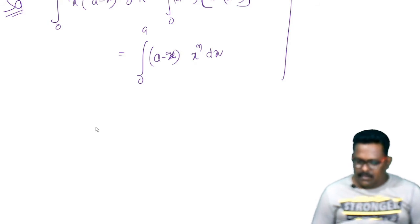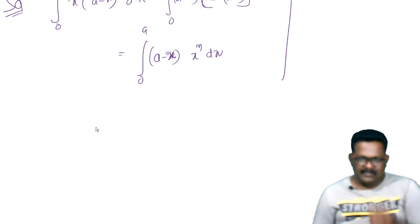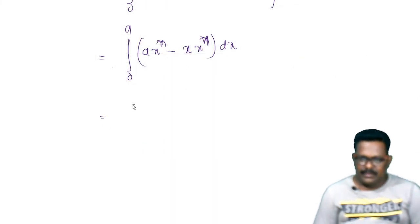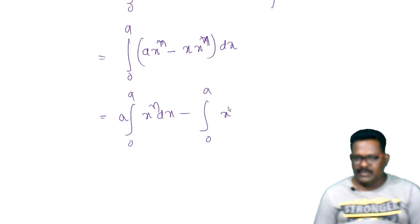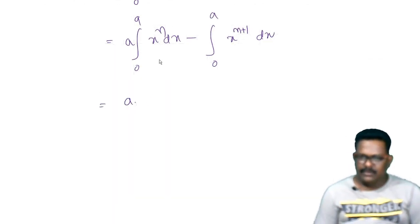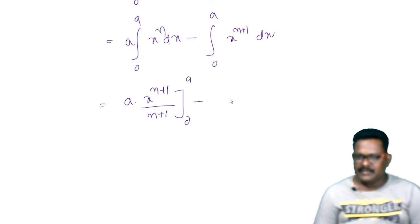This gives: the integral from 0 to a of a·xⁿ dx minus the integral from 0 to a of x·xⁿ dx, which is the integral from 0 to a of a·xⁿ minus x^(n+1) dx. Integrating by parts or directly: a · [x^(n+1)/(n+1)] from 0 to a, minus [x^(n+2)/(n+2)] from 0 to a.